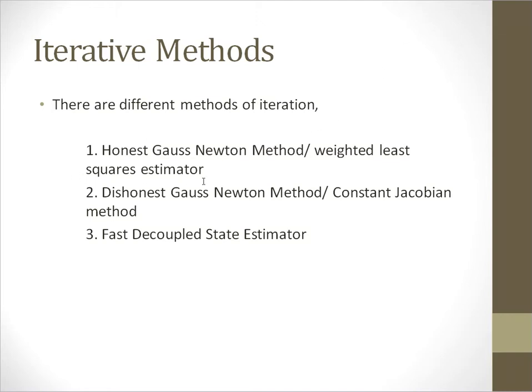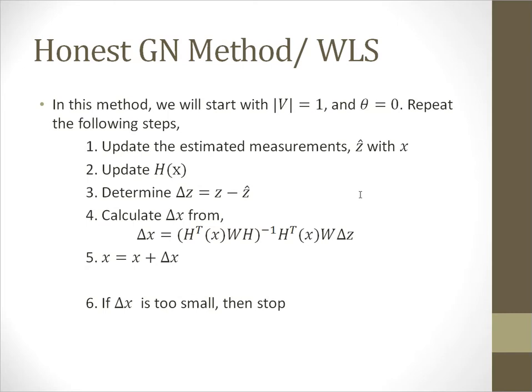A simplification of the weighted least square estimator is the dishonest Gauss-Newton method, which is also known as constant Jacobian method. And the fast decoupled state estimator is the simplification of the constant Jacobian method.